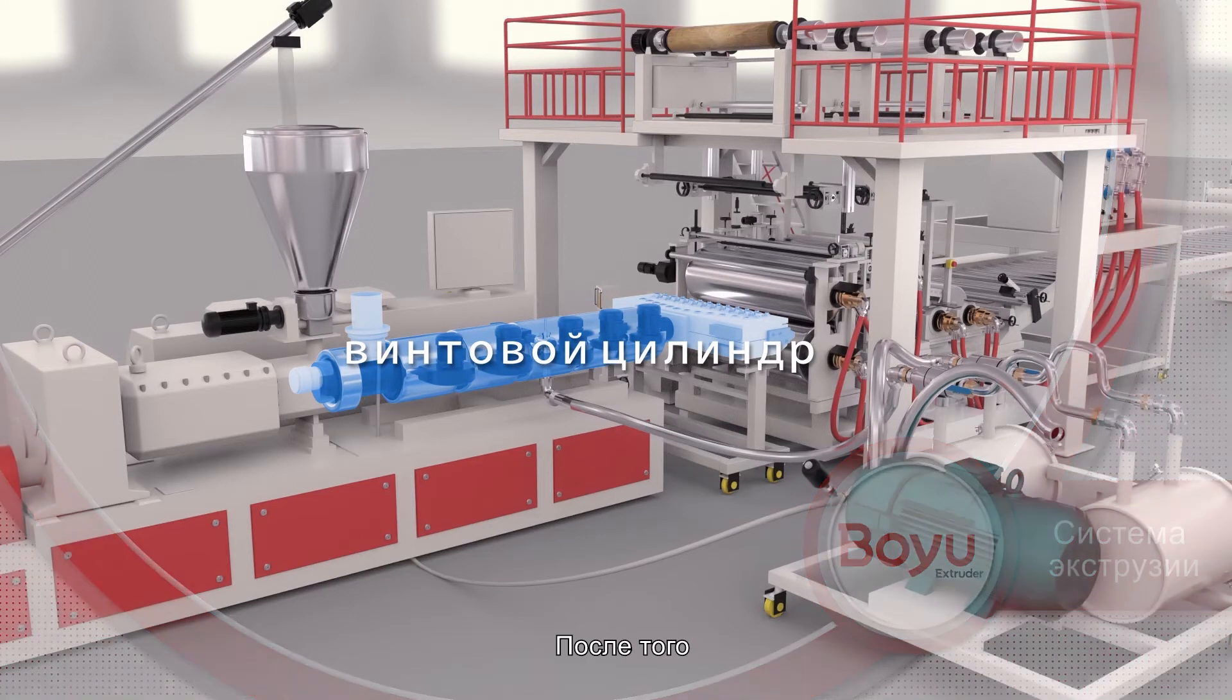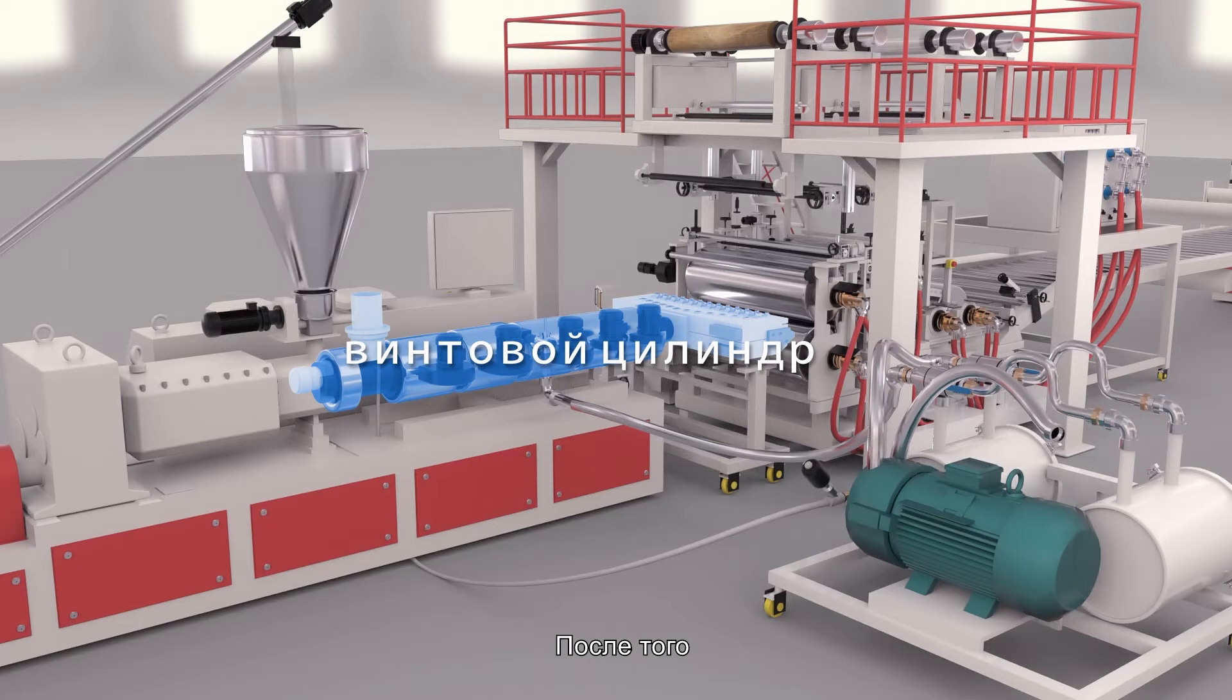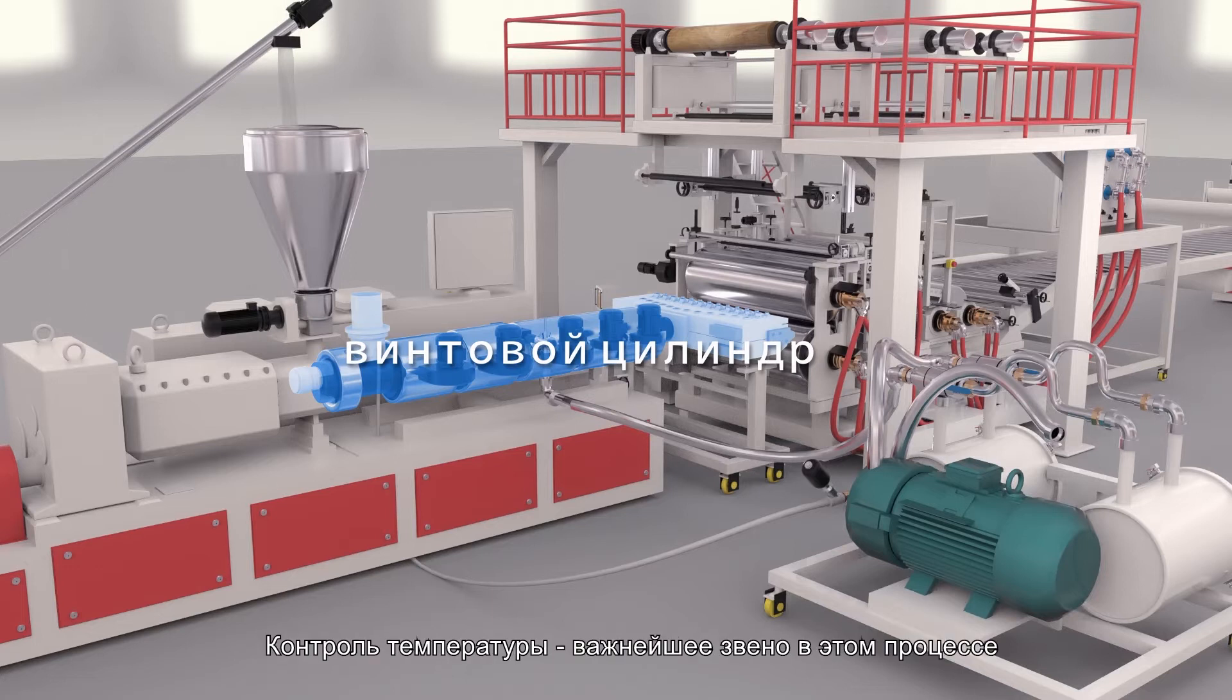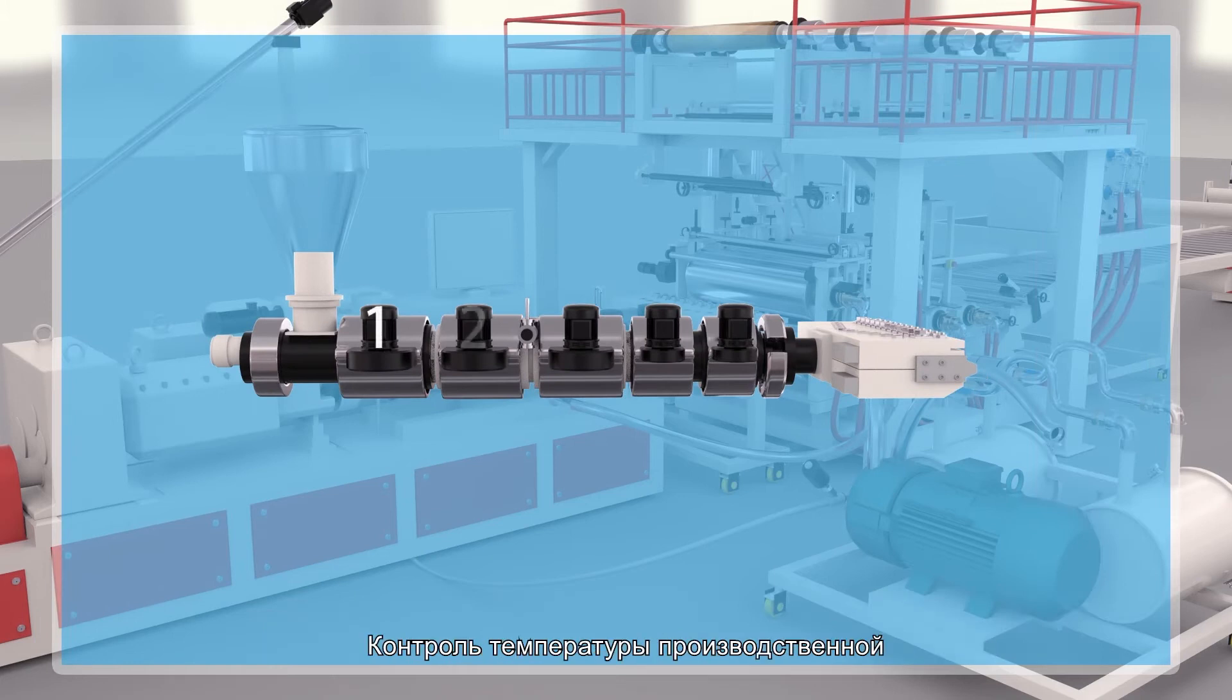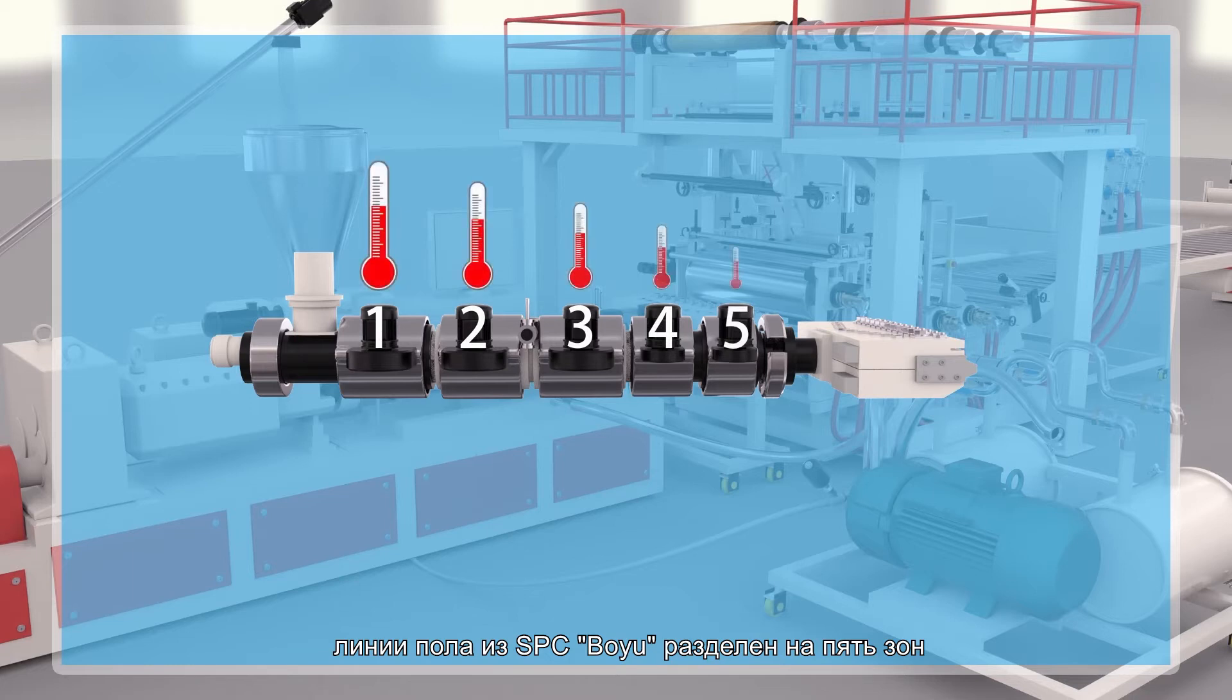After entering the screw barrel, the materials are plasticized by heated rolling. In this process, the temperature control is the most critical link.